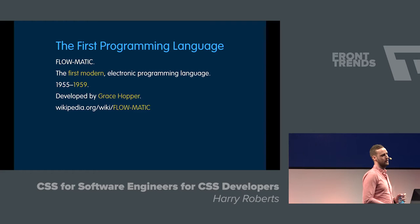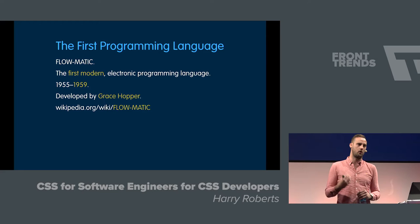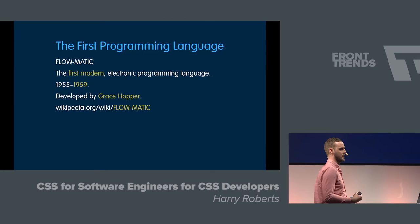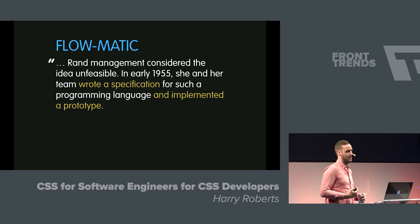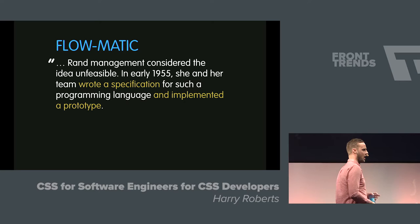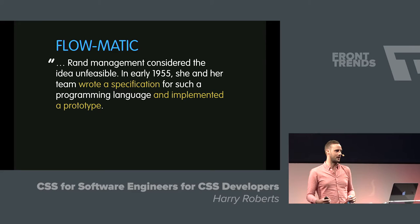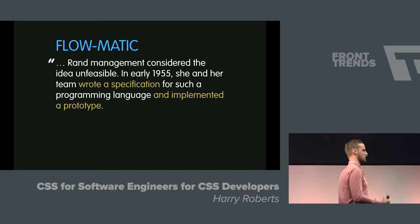Grace Hopper is a really, really important figure in modern computer science. She did a lot of work with the US Navy, the military, and she's one of the first ever proper computer programmers, and a lot of her work has been very influential. Flomatic went on to influence things like COBOL and Fortran. She's got a very can-do attitude. Grace went to her managers at a company called Rand, and she suggested this idea of a human-readable programming language. Her managers just didn't even think it was possible. Instead of being disheartened, she rolled her sleeves up and just did it anyway, which I think is awesome. She had a spec for 1955, and in 1959, her and her team had the first version of Flomatic out there and working.